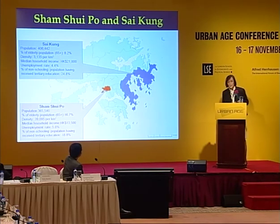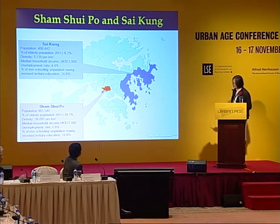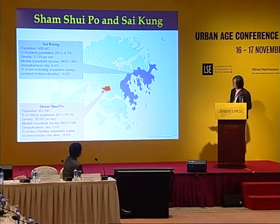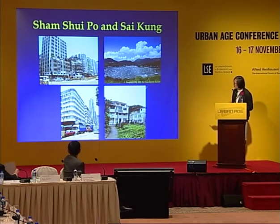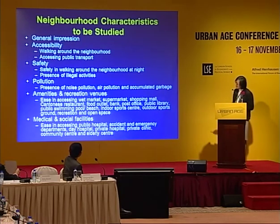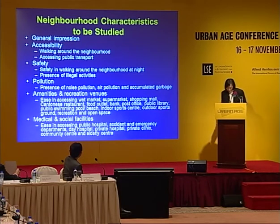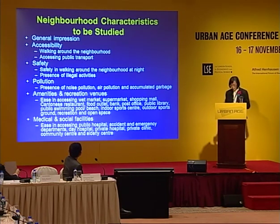If we go down to the neighbourhood level, I chose two contrasting areas: Sai Kung and Sham Shui Po. Sham Shui Po is a poorer, denser area, while Sai Kung is more open — low rise village houses with a lot of open spaces. These are some of the characteristics we examined: accessibility, safety, pollution, amenities, medical and social facilities, and so on.